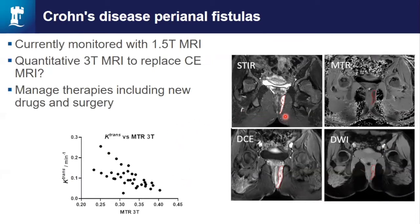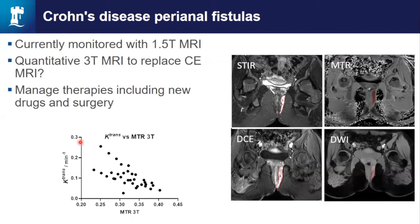This is a study of Crohn's disease patients, looking not at the small bowel but at fistulas in the body wall — truly unpleasant for patients. We're comparing MT, DWI, and DCE contrast-enhanced imaging. These patients are currently only scanned at 1.5T in the UK. The question is whether 3T DWI or MT could replace contrast-enhanced MRI. In an initial study, we found a relationship between MTR at 3T and K-trans measured at 1.5T, as a potential way of improving management — because the question is whether to give drugs or surgery.